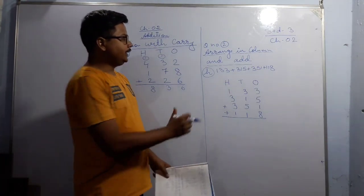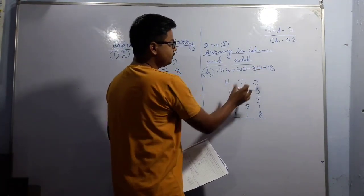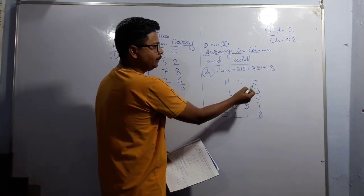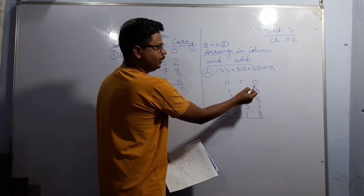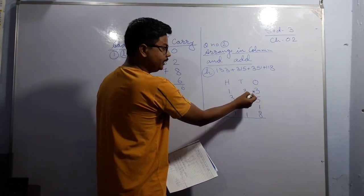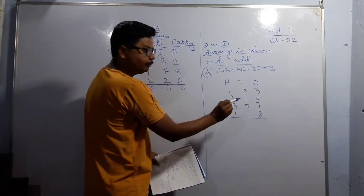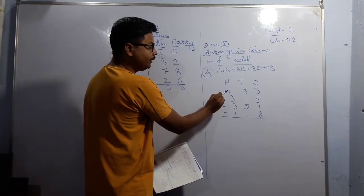Now see, I have written these numbers in columns. The number which is in the place of ones, I have written in that place. The number which is in tens place, I have written in tens place. And the number which is written in hundreds place, I have written in hundreds place.